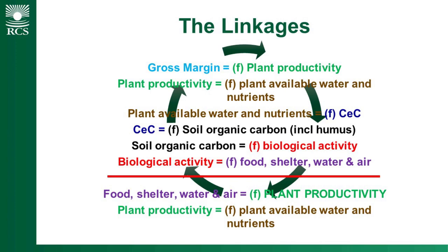There are a number of linkages I just want to run through quickly in the soil. You'd agree with me that gross margin really is a function of plant productivity — the more productivity we get, whether it's cropping or grazing, the better our gross margin is likely to be. And plant productivity is a function of our plant-available water and nutrients, which itself is a function of cation exchange capacity — in other words, the ability of the humic colloids or the clay colloids in that soil to exchange moisture and nutrients with the plants and the biology.